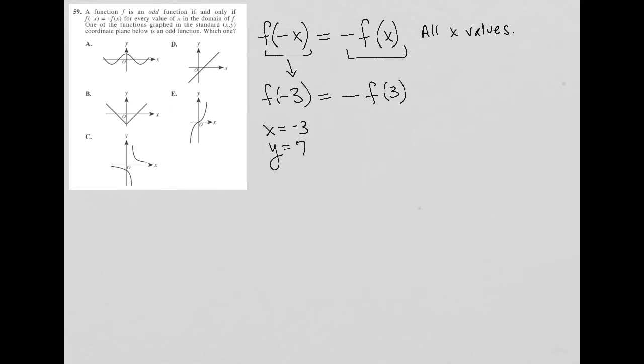That would mean, that would tell me that if there's an odd function, when x is positive 3, I would expect y to equal negative 7. That's what this statement means. That's what this original statement here actually means. When I switch the signs of x, I also switch the signs of y.